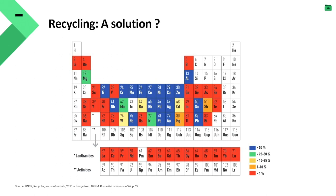For those that might not believe there is no real recycling: this is a table from the UN, like the periodic table of elements. All the ones with colors are used in IT. The ones in blue are classic metals we recycle with more than 50%. All the reds are those that we recycle with less than 1%. Less than 1% — so basically nothing at all. This illustrates pretty well how recycling works in IT: it doesn't. There is no recycling. We cannot believe that we will close the loop, at least for now.